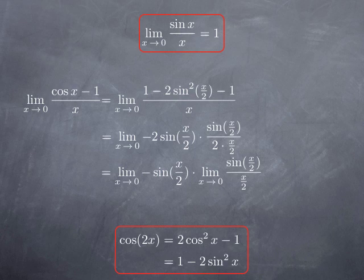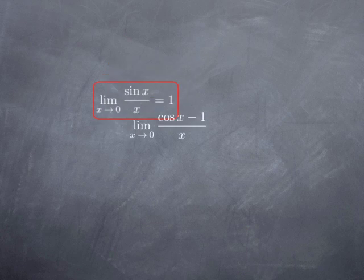Sine of x/2 when x goes to 0 approaches sin(0), which is 0. The other term — sin(x/2) over (x/2) — has a limit because the limit of sin x over x at 0 approaches 1. Therefore, we obtain the limit of sin(x/2), which is 0, multiplied by the limit of sin(x/2) over (x/2) at 0, which is 1. In other words, we obtain 0 for this limit.